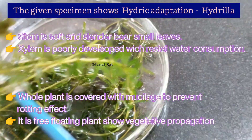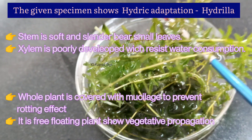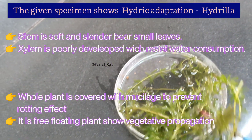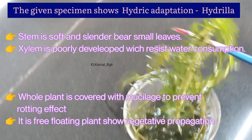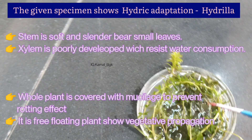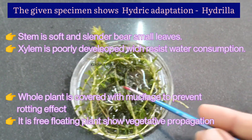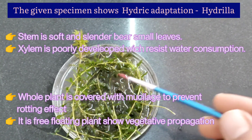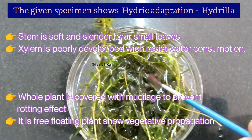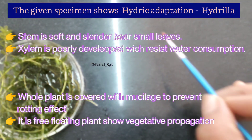The given live specimen shows hydric adaptation, which is Hydrilla. Stem is soft and slender, bearing small leaves. Xylem is poorly developed, which reduces water consumption since this plant grows completely inside water. The whole plant is covered with mucilage to prevent rotting. It is a free-floating plant showing vegetative propagation. Roots may be absent or present as minute hair-like structures called rhizoids, which mainly support plant growth.